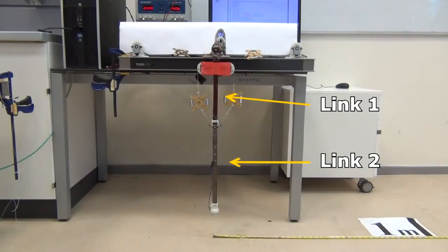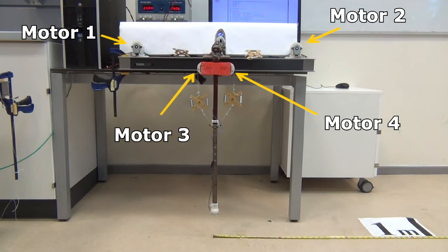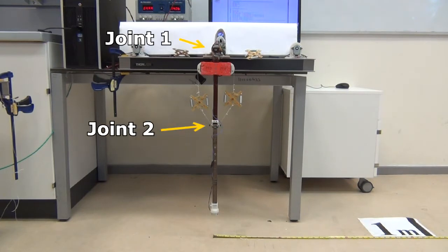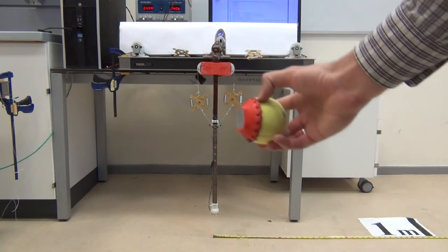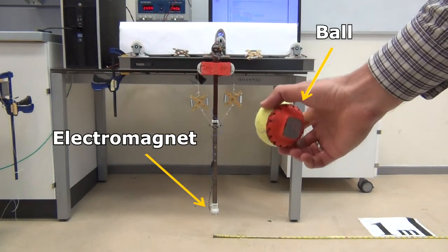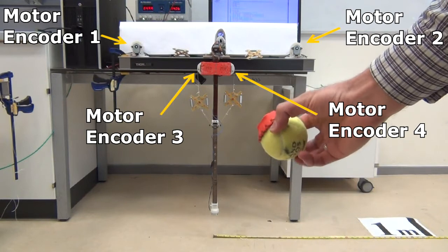The robot consists of two links and is actuated by four smart motors connected to the joints via four nonlinear elastic elements. The ball is attached to the robot with an electromagnet. Motor and joint positions are measured with high-resolution capacitive encoders.